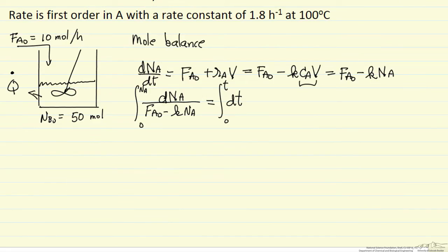So to integrate this, the left side, we have minus 1 over K times the log FA0 minus K times Na, and evaluated between the two limits, the right side is just T.